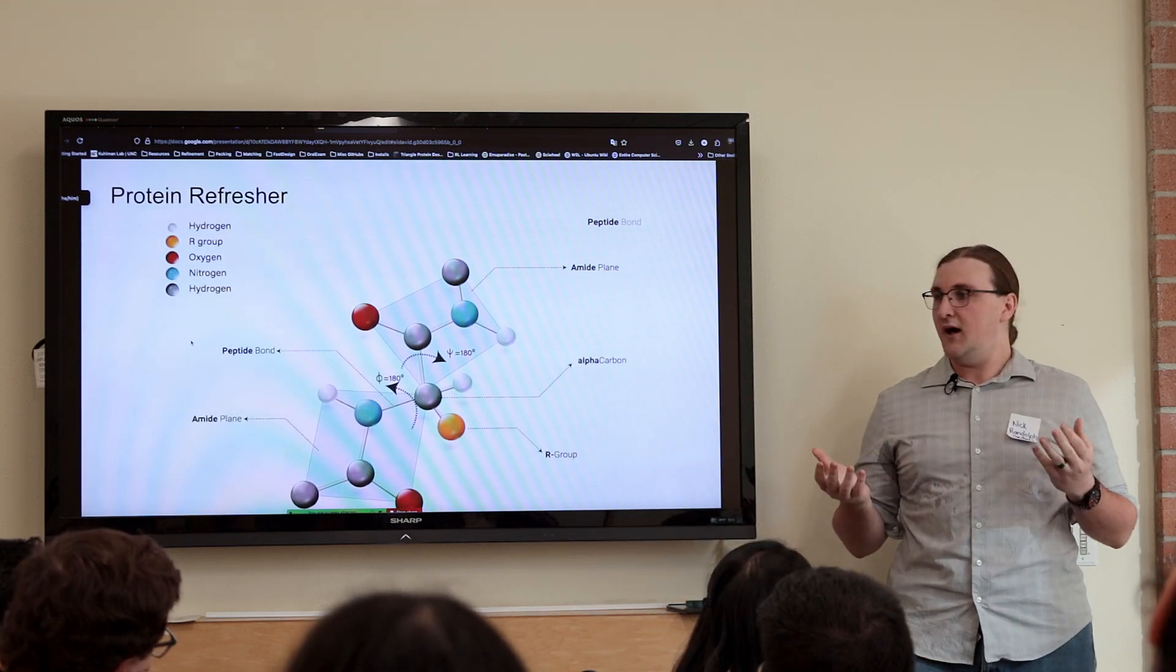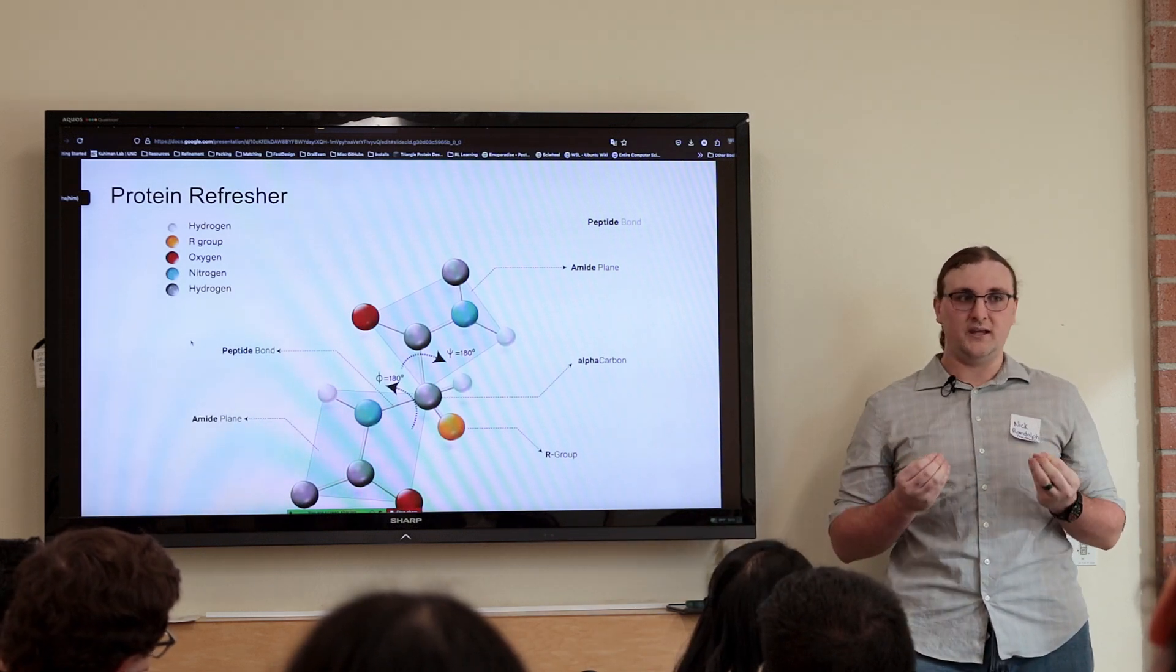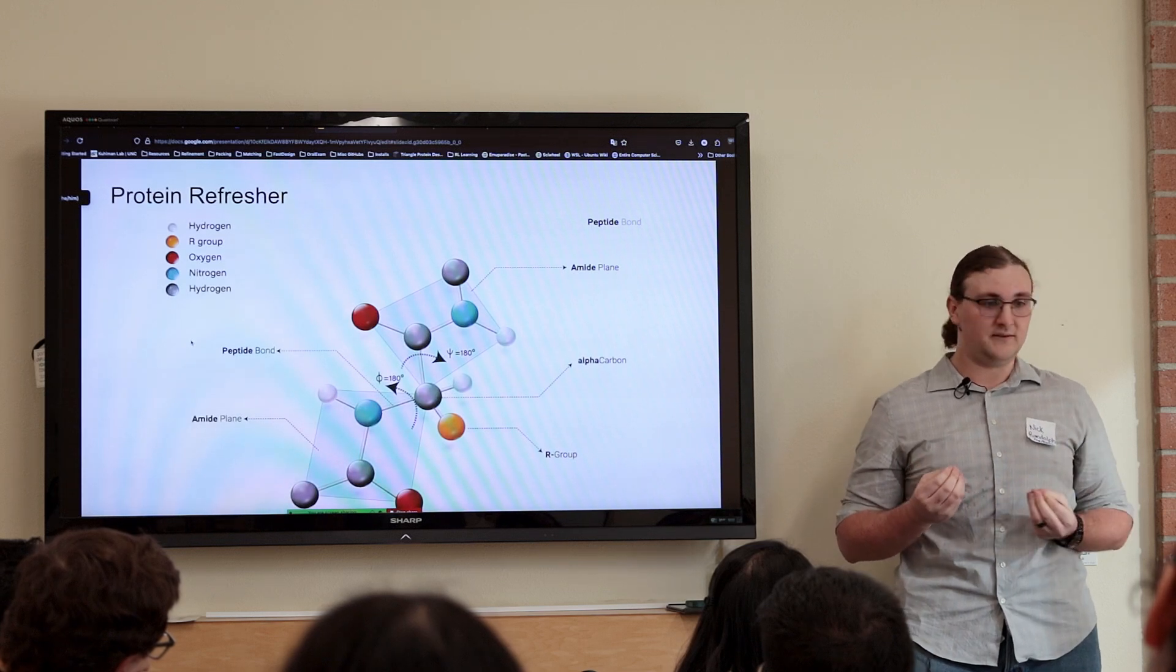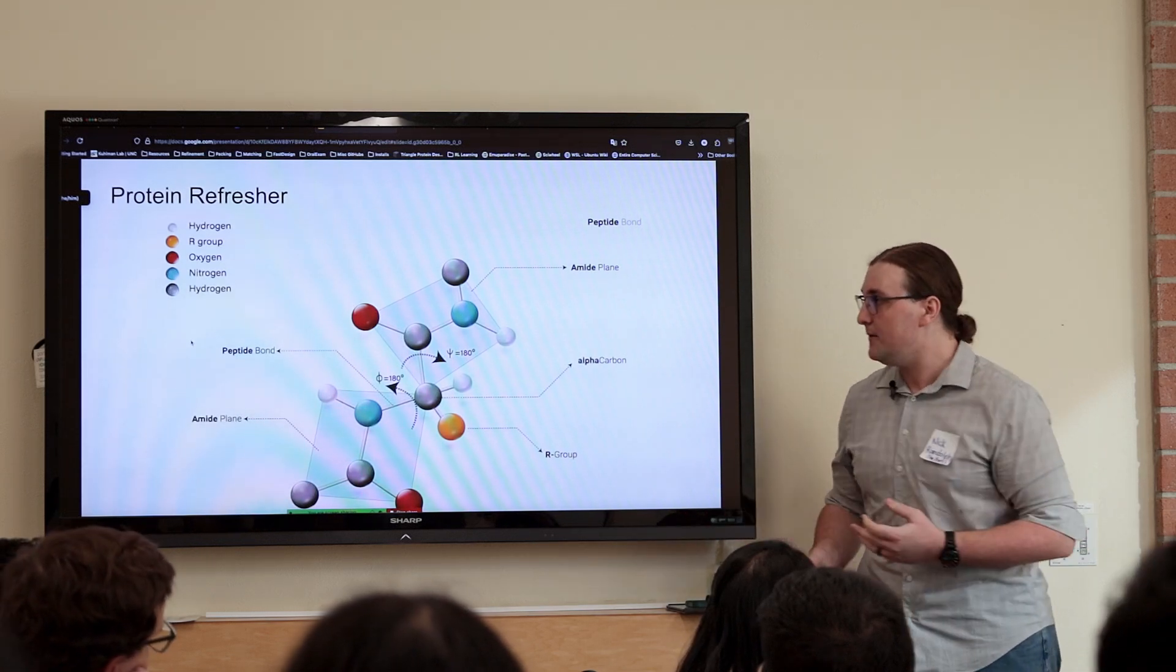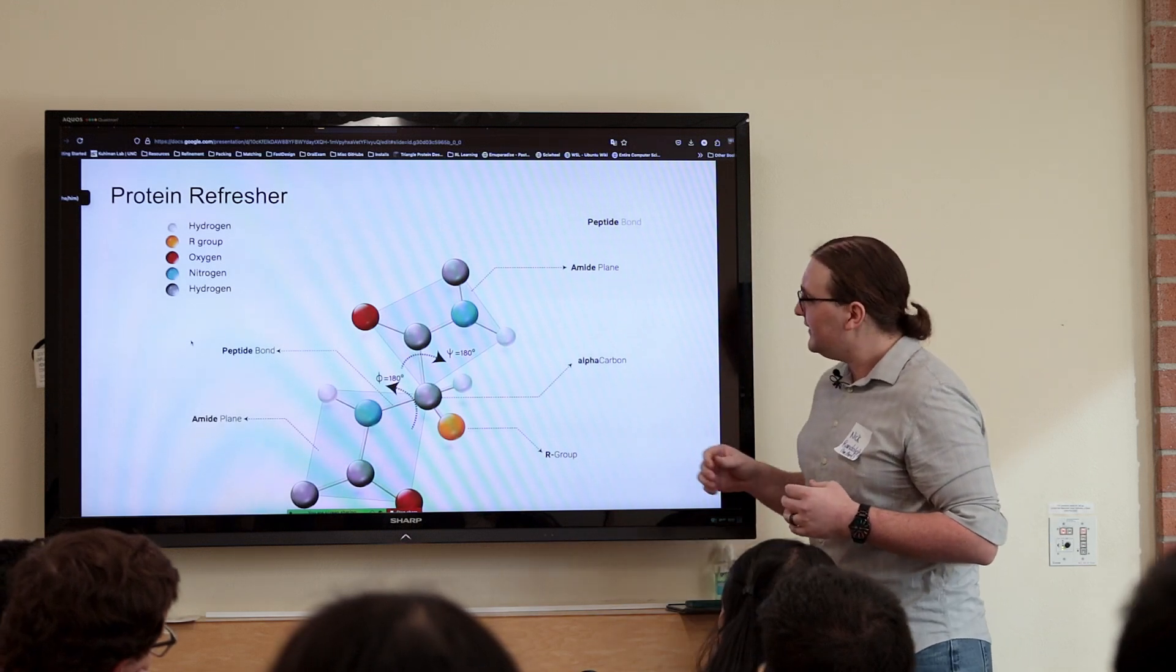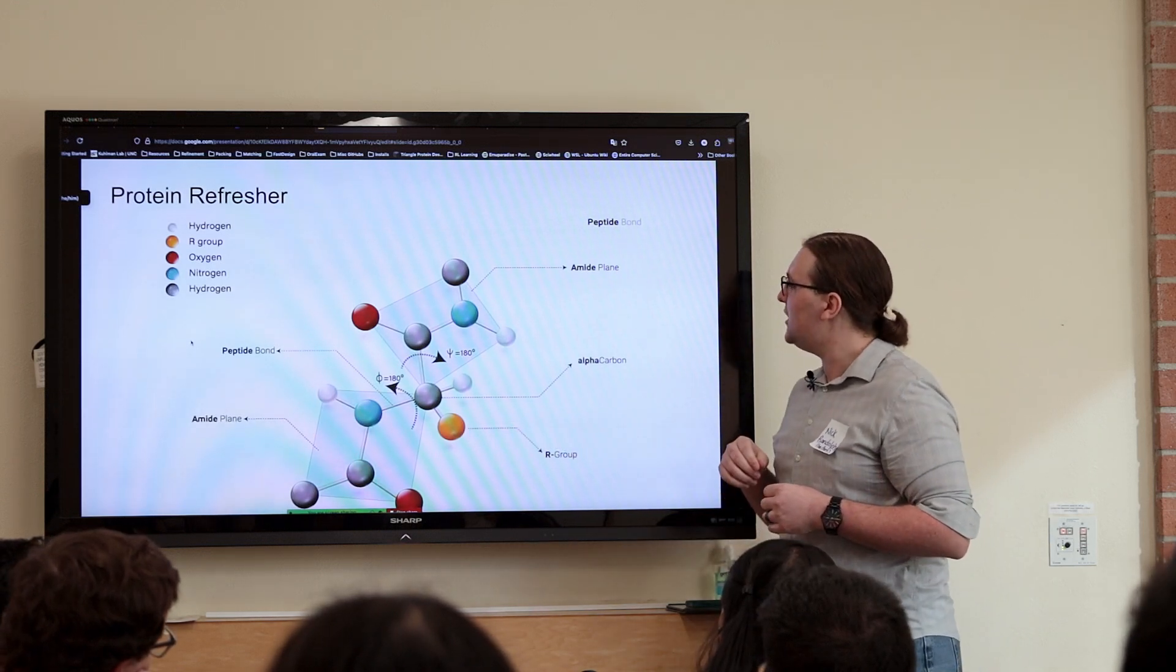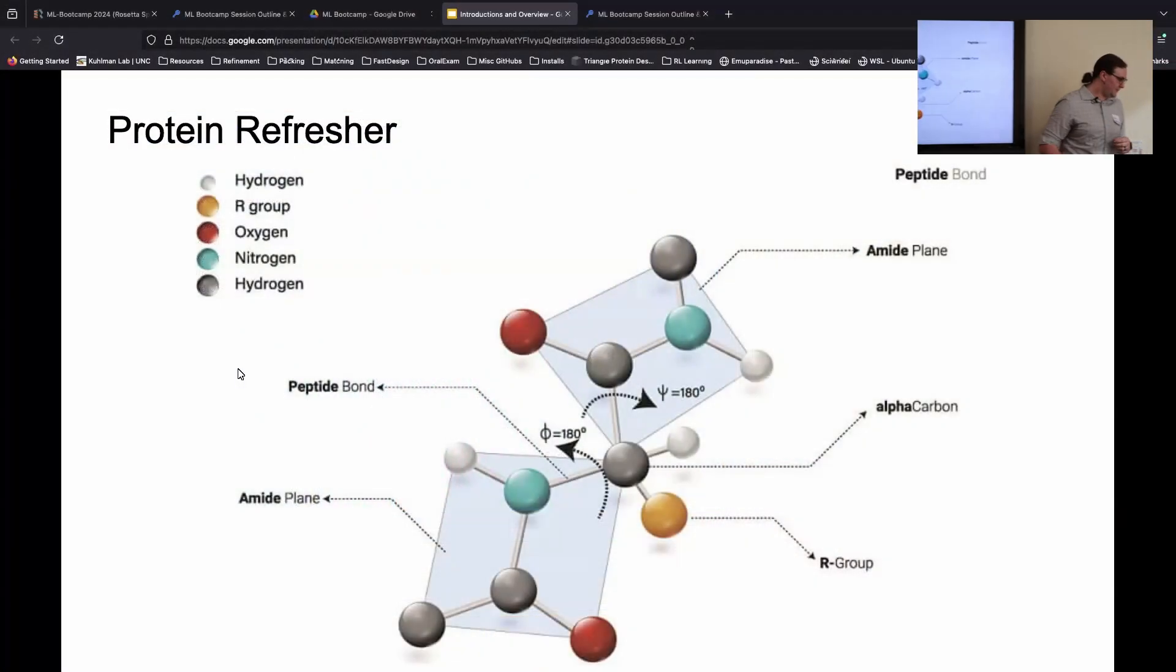Some of the most useful things here are these dihedral angles. These define how skewed the planes are relative to one another. And these are really useful because they define a lot of properties of proteins. For example, certain phi-psi angles really restrain what amino acids are preferred at this location. It's really useful for helping predict side chain locations as well.